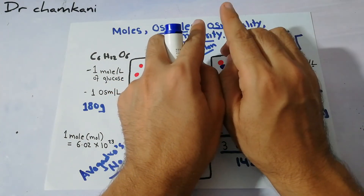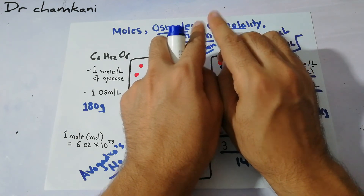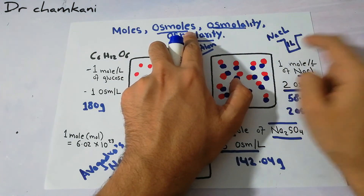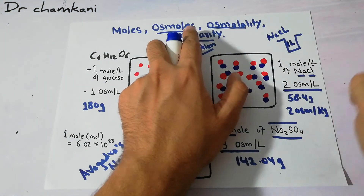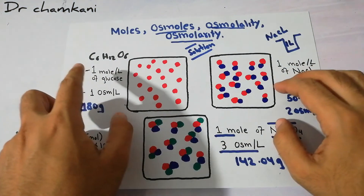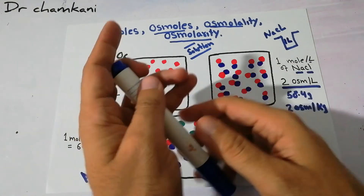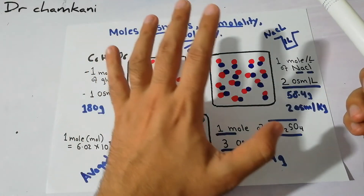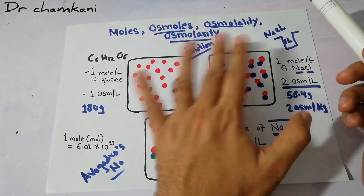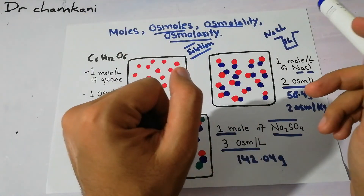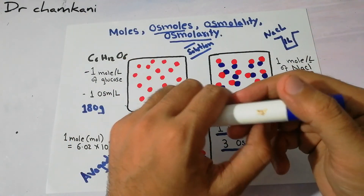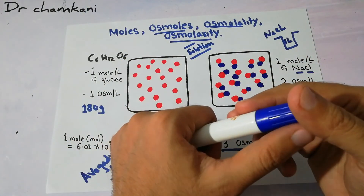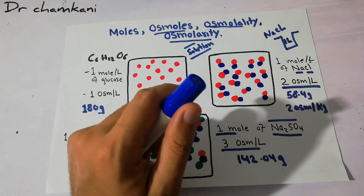There is not much difference between osmolality and osmolarity — it just depends on whether we consider the fluid in liters or kilograms. Most of the time we consider liters rather than kilograms. So that's all about the mole, osmol, osmolality, and osmolarity. Hope you have understood this topic. Thanks a lot for watching.